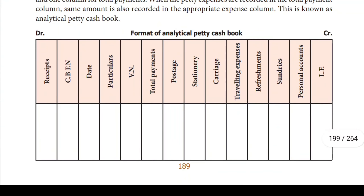If you look at Petty Cash, the receipt has columns: CB, FN, Date, Particulars, VN, and Total Payments. The first column is very important. If you look at Total Payments, you will be able to get full marks. You will have divisions.